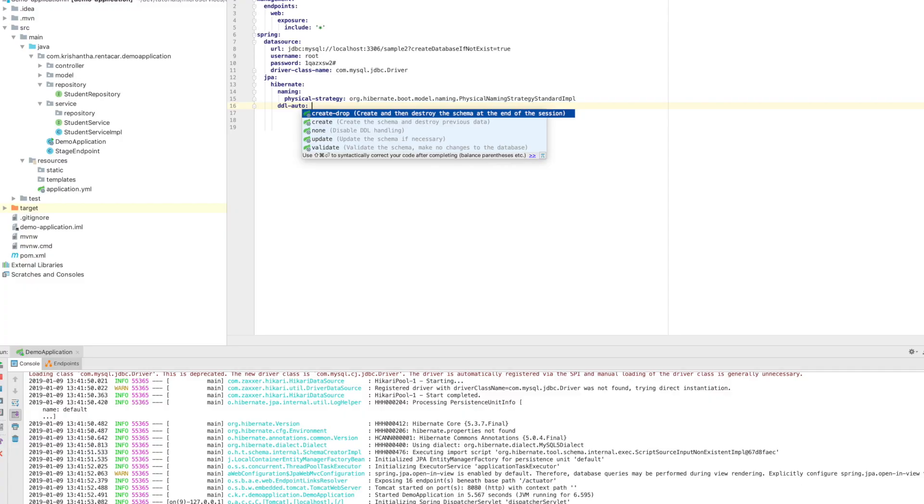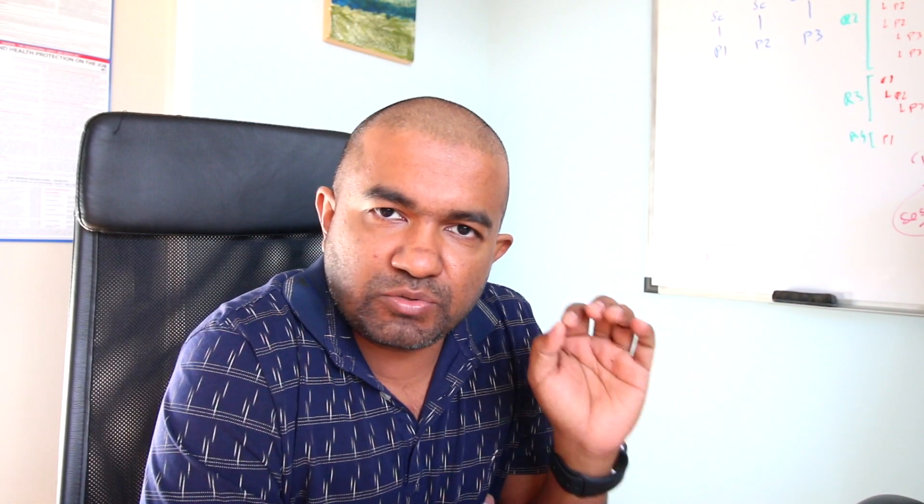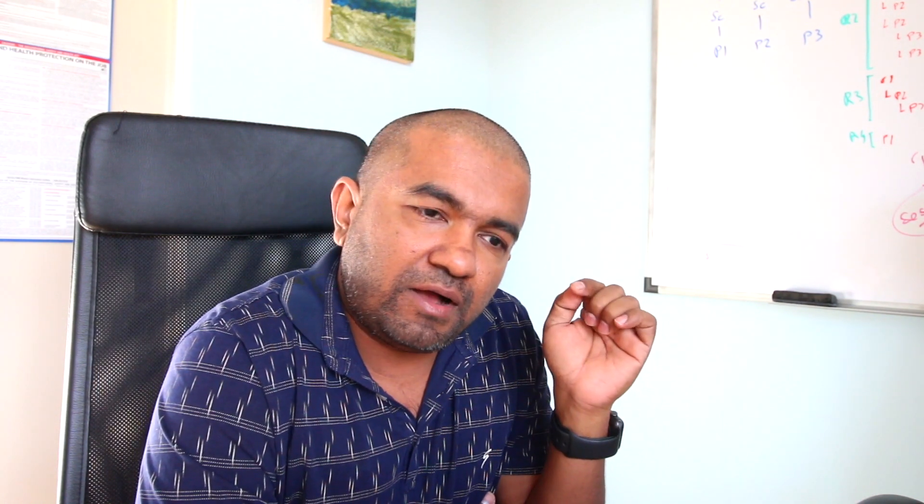There are multiple other options — the ideal one is 'update'. Update is a really nice option because it won't delete records. It will create the table if it doesn't exist, and if you add something to your model it will add those columns, with some restrictions around nullable fields. With 'update' mode, your records remain on the next run. You can try adding a new field to your model class, restart the service, and you'll see the new column created in the table.